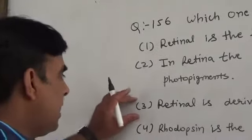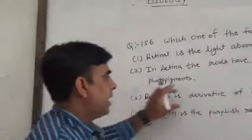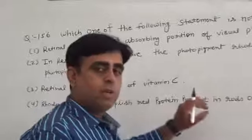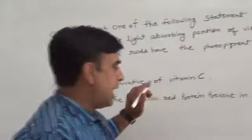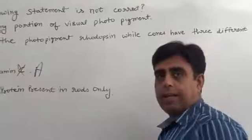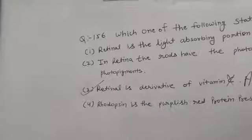The answer is third — retinal is the derivative of vitamin C — because it is actually the derivative of vitamin A. All others are correct. So the answer will be third.